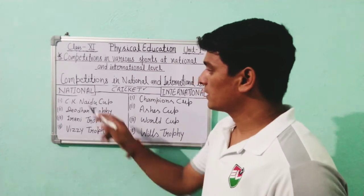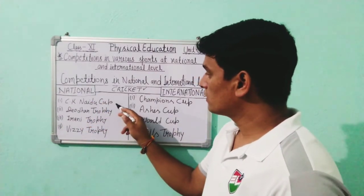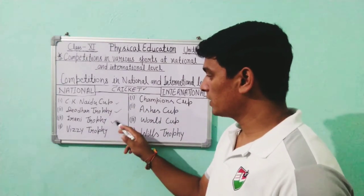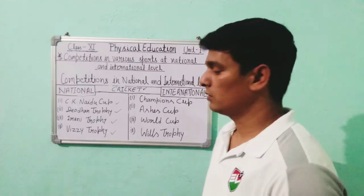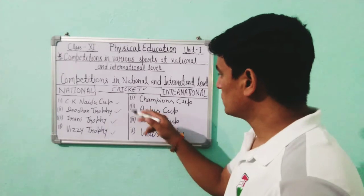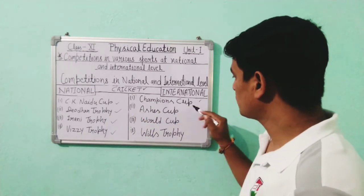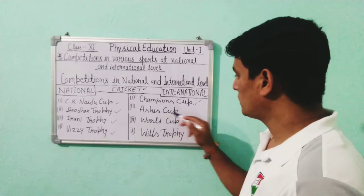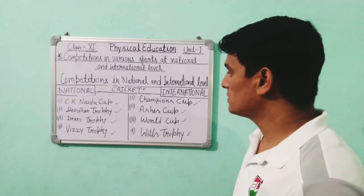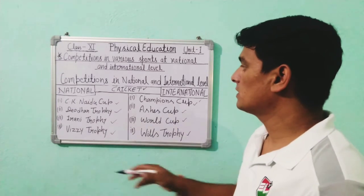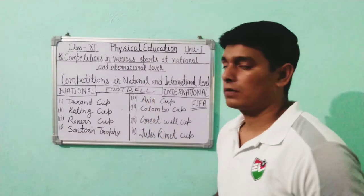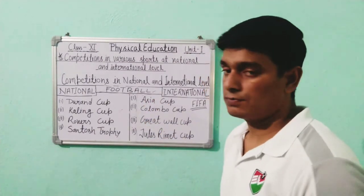Now let's talk about Cricket. National level competitions include CK Nayudu Cup, Deodhar Trophy, Irani Trophy, and Vijay Trophy, among others. At the international level, there are the Champions Cup, Wills Trophy, and the Cricket World Cup.